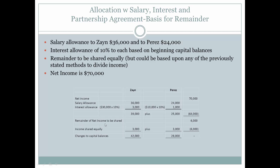The remainder of $6,000 is shared equally — $3,000 to Zane and $3,000 to Perez. Adding everything together, the net income has been fully allocated: $42,000 to Zane and $28,000 to Perez. This is why you must calculate the interest allowance on beginning capital balances — otherwise you'd be in a forever cycle of changing figures. You have to start somewhere, and you start with the beginning capital balances.